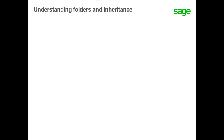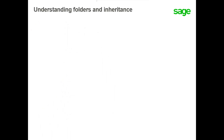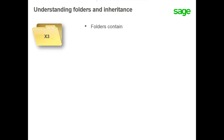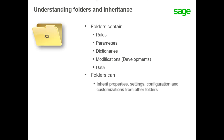Now that you have viewed the architecture, let's take a look at the folders. When a folder is created, it creates a directory on the application server, and the tables and users are on the database server with the same name. An individual folder contains rules, parameters, dictionaries, and modifications for development, along with data. Each folder that is created inherits information from the X3 reference folder, which contains all the standard defaults from the software, such as screens, workflows, and general parameters.